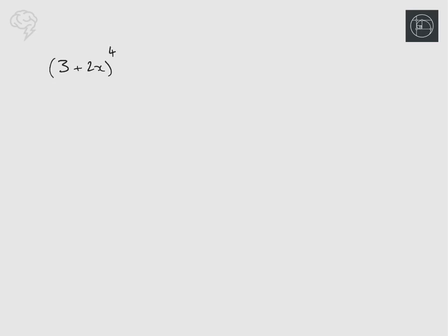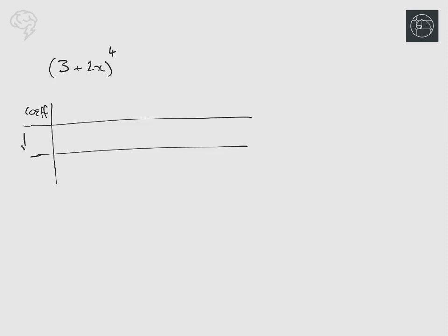I'm going to show you a nice method for doing the binomial expansion. Let's start with something you probably learned in the first year, something like this with a four at the top. You're going to have three rows: one for the thing going up in power, one for the thing going down in power. Usually the thing going down is the number and the thing going up is the x term, because you're doing ascending powers of x.